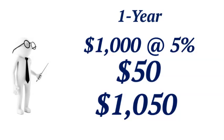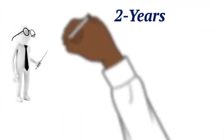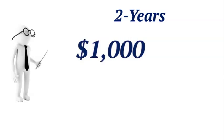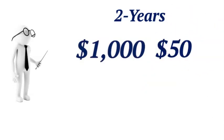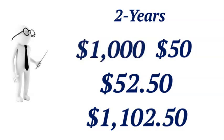Here's where compounding interest comes into play. In the second year, not only will you earn 5% on your initial $1,000, but you will also earn interest on the $50 you earned in the first year. So instead of earning $50 in interest again, you'll earn $52.50, bringing your total to $1,102.50.